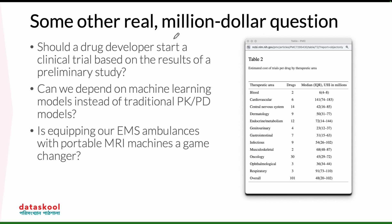To bring a new drug to market, there are several stages: preclinical, animal models, then Phase 1, Phase 2, and Phase 3 studies, and so on. At each step, you decide whether to move forward. For example, moving from Phase 2 to Phase 3 — should we proceed or not? Because if the drug ultimately cannot get FDA approval, you cannot move to that phase. That decision-making is critical. How will you make that decision? Think about it.